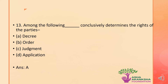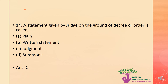The next question: among the following, which conclusively determines the rights of the parties? The options are: a) decree, b) order, c) judgment, or d) application. The correct answer is option A — a decree is the one that conclusively determines the rights of the parties. A statement given by a judge on the ground of a decree or order is called a judgment. The judgment is the final decision of any matter or issue; it is given on the last hearing, and only an appeal follows the judgment.